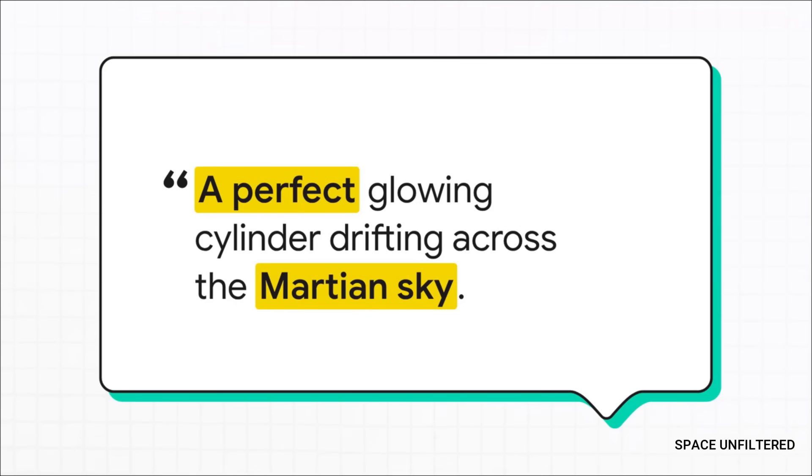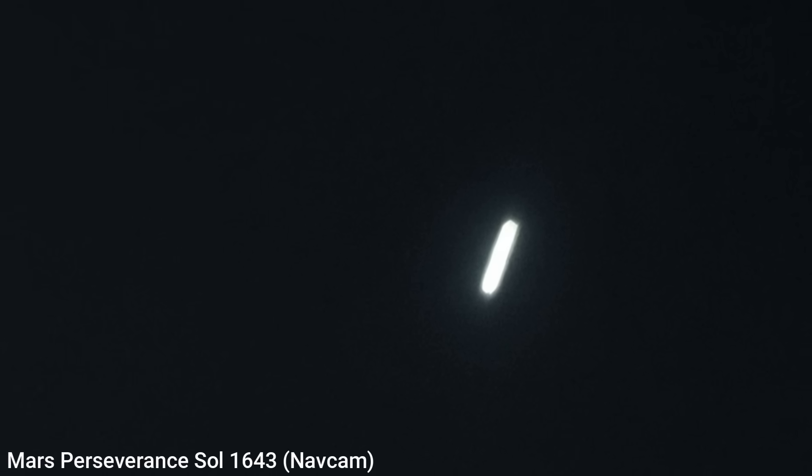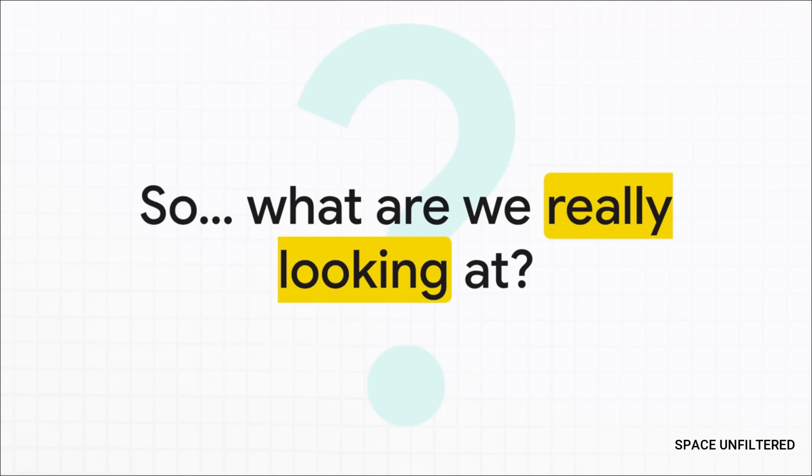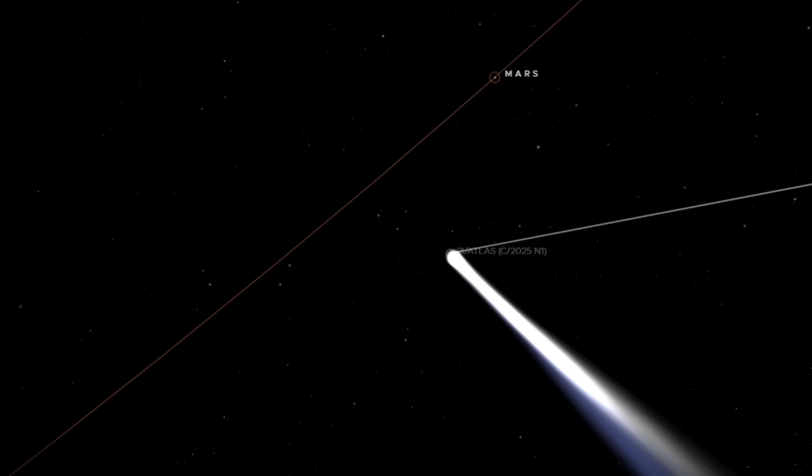And that's the description that really took off online. Someone called it a perfect glowing cylinder. That phrase paints such a vivid picture. It's not just a streak. It's something with purpose, with structure. It's what got everybody talking. So yeah, that is the big question. What are we really seeing here? An interstellar visitor? A trick of the light? Or something else completely?